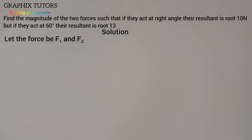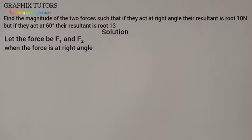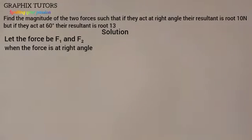So let's start. The first condition is the two forces are acting at right angle to each other, and when they are acting at right angle to each other their resultant is equal to the square root of 10. Now let me take you down the memory lane a little bit. When you say something is perpendicular it means they are forming 90 degrees to each other.